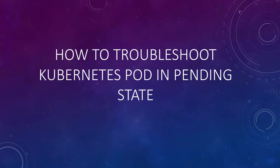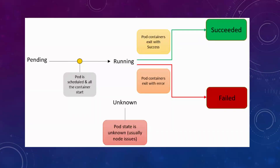Before we jump into that, let's understand how pod deployment happens. Whenever you deploy a pod, initially it sets the status as pending, then the scheduler picks it up and the pod gets scheduled to the respective nodes. Then it waits for all the containers to start, and then the status changes to running. If the pods complete successfully, it goes to the succeeded state; if there is any error, it goes to the failed state.